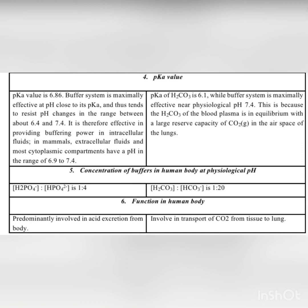At physiological pH, the concentration ratio for the phosphate buffer is 1:4, and for the bicarbonate buffer it is 1:20. Regarding their function in the human body: the phosphate buffer is involved in acid excretion from the body, while the bicarbonate buffer is involved in the transport of carbon dioxide from tissues to the lungs. Hope you understood the topic well.